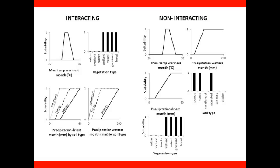One aspect we were particularly interested in was the best way to handle static and dynamic variables when they might be interacting to determine habitat suitability. For example, for the simulated species on the left, precipitation and soil type interact so that locations on porous soils need a higher level of precipitation in order to be suitable. The suitability function for the species on the right is similar in all aspects except that soil type and precipitation act independently to determine the habitat suitability.